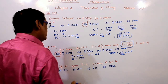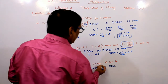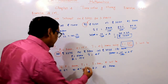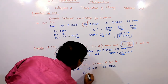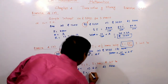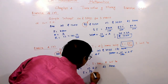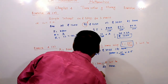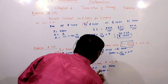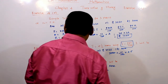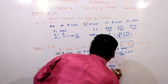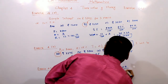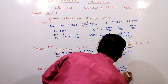If P = 5,000, T = 1, I = 300, find R. The formula is Interest = PNR by 100. So 300 = 5,000 into 1 into R divided by 100. Solve for the rate of interest R.